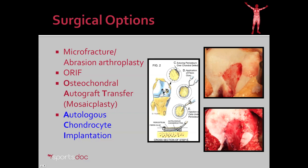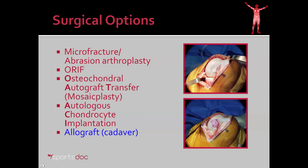Autologous chondrocyte implantation, also known as ACI, is another option. In this procedure, we take a biopsy — a very small piece of healthy cartilage from the knee — and grow it in the lab. After about six weeks, we have enough cells to come back, isolate the defect, and create a small pocket over that defect using periosteum or a synthetic tissue. We then inject the cells into that pocket, allowing them to take and grow and restore normal cartilage. Finally, there's allograft or cadaver — we take a piece of bone and cartilage from a cadaver, exactly match the defect in the knee, and fix it in place with bioabsorbable screws or other hardware, restoring healthy cartilage.